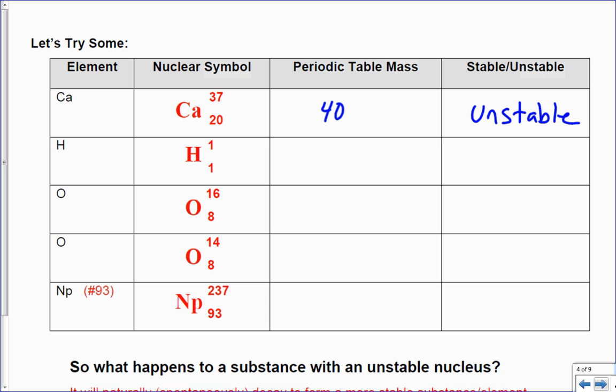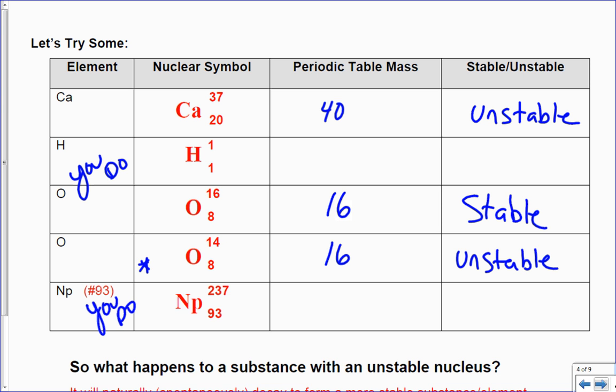Let's do oxygen-14. If I look at the periodic table, my periodic table mass is 16, here it's 14, so this is unstable. Where the one right above it, oxygen-16, is supposed to be 16, so this one is stable. Looks like we have two you-dos. Basically, is it on the reference table the right way or not? If it's on the periodic table the way it's there, it is stable.